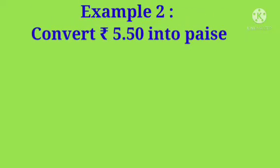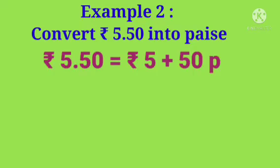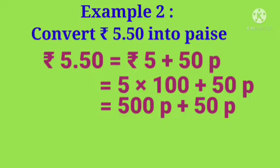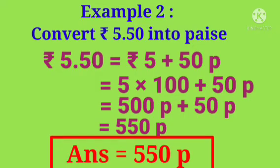Example 2: Convert rupees 5.50 into paise. So we first divide it into rupees and paise and it becomes rupees 5 plus 50 paise. Now multiply the rupee with 100. 5 into 100 plus 50 paise, which is equal to 500 paise plus 50 paise, which is equal to 550 paise. So rupees 5.50 is equal to 550 paise.